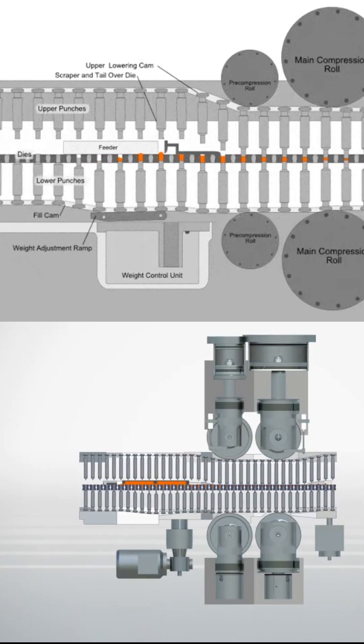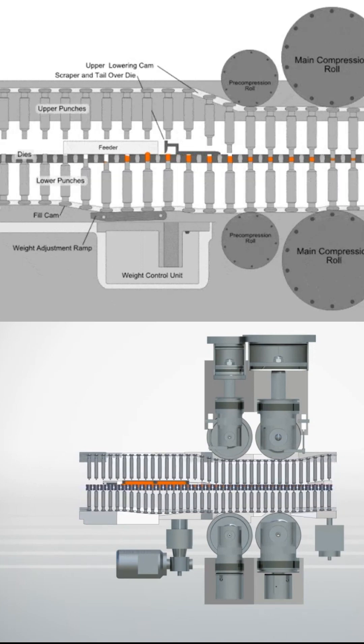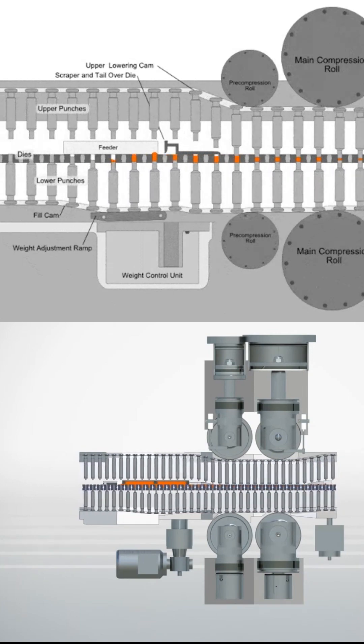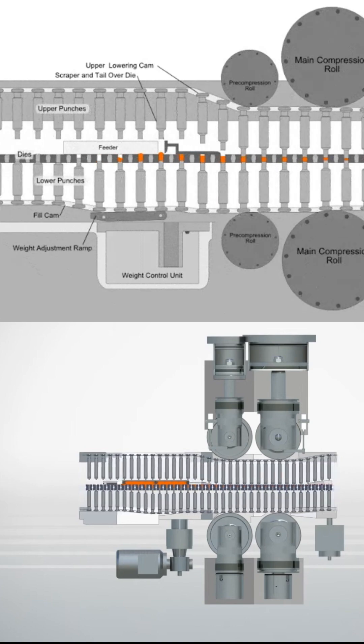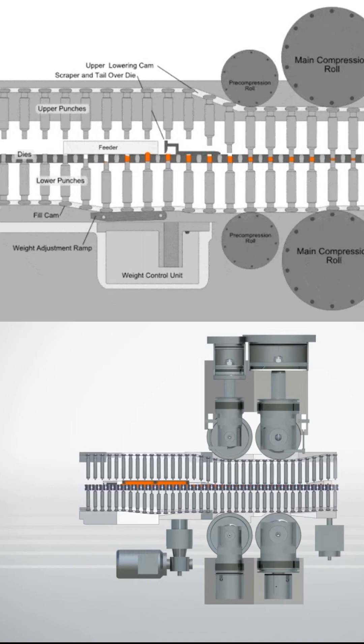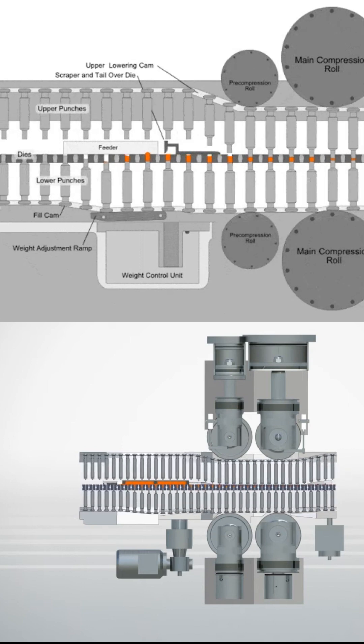The compression cycle of the Courtois tablet press is quite similar to that of most modern tablet presses on the market. The process of compressing powder into tablets can be divided into six stages.